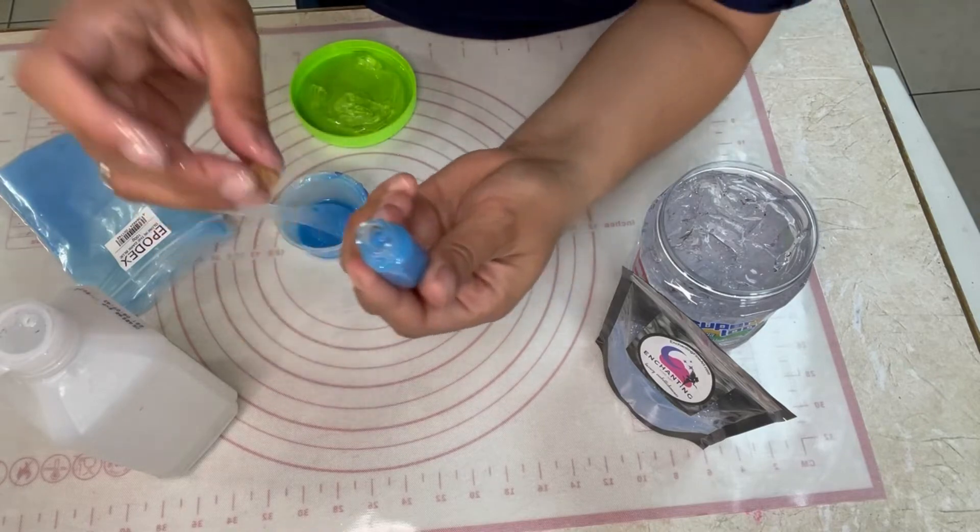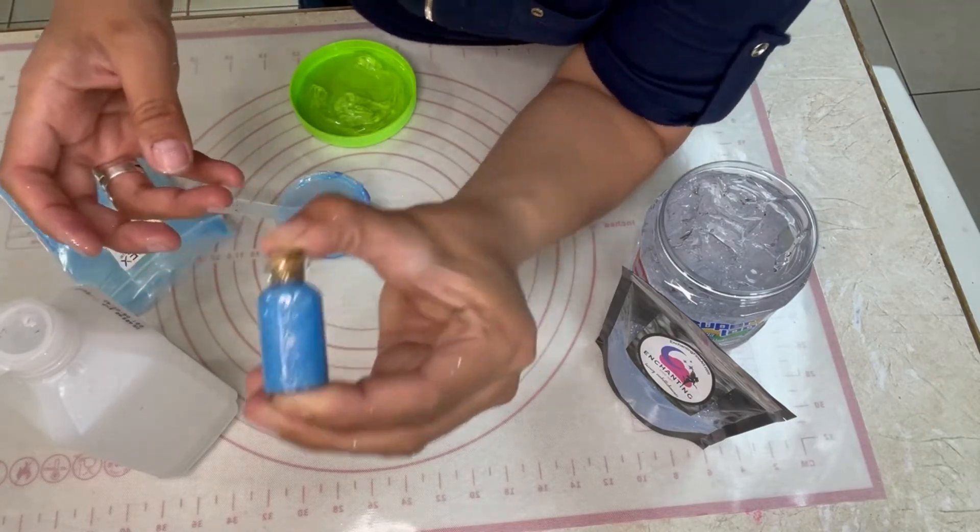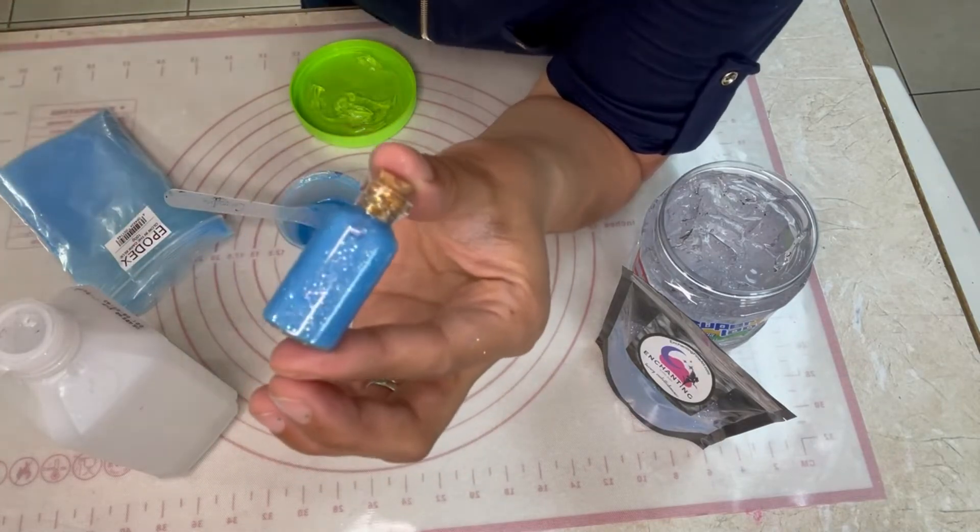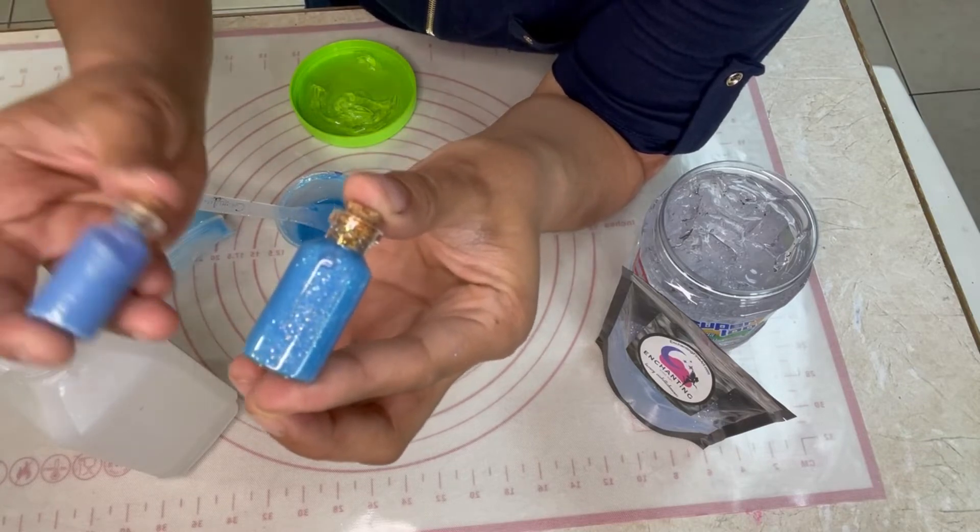Now, I added the glue off of camera so you're not going to see that here in this video but it's super easy. All you do is clean the inside of the rim of the bottle with a paper towel, a dry paper towel